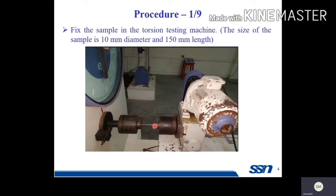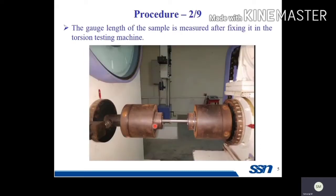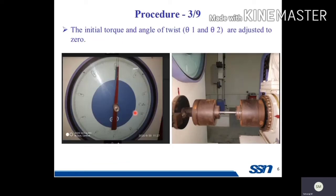Then you measure the distance between this point and this point, which is known as the gauge length. After measuring this, for the initial settings, the dial pointer should be moved to zero. Similarly here, move this pointer to zero, and here also move to zero. These are the three initial conditions you have to set.